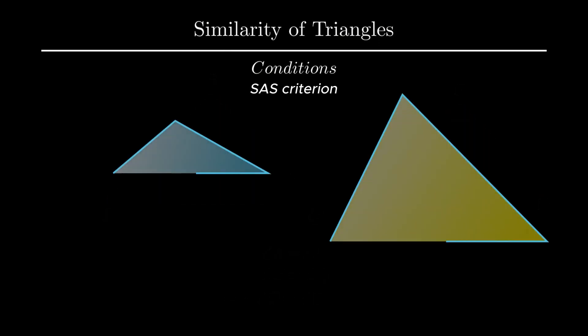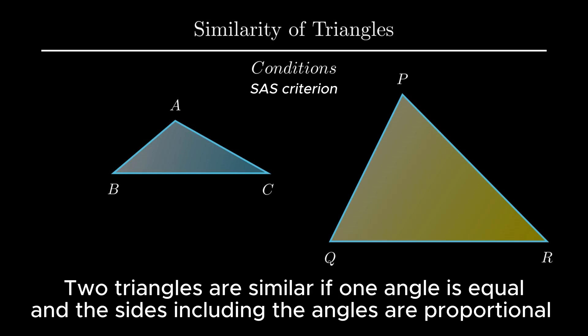Third condition for similarity of two triangles is called SAS, that stands for side-angle-side. This condition states that if one angle of a triangle is equal to the one angle of the other triangle, and the side including these angles are proportional, then the given triangles are similar.